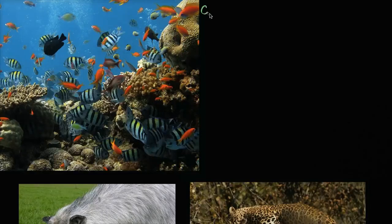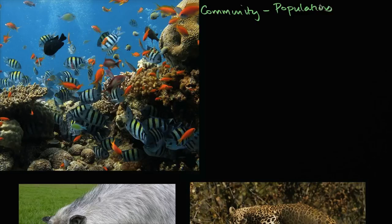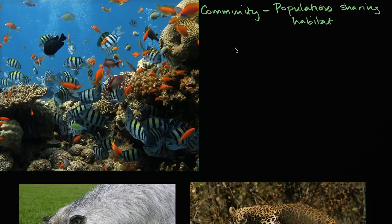In the introduction to ecology, we introduced the idea of a community, which is all the different populations that are in the same habitat, sharing the same area. Populations sharing a habitat, whether in water, air, or land, share a similar volume even. In this video, we're going to focus on the interactions between those populations — the interactions between the different species.